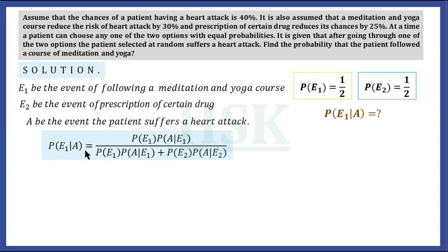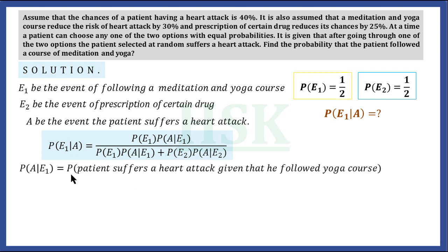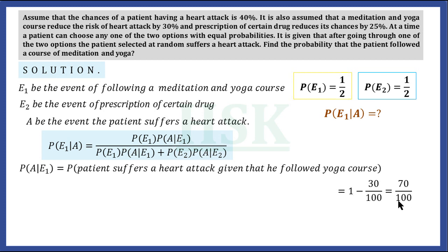To calculate P(E1|A), we require P(A|E1) and P(A|E2). P(A|E1) is the probability that the patient suffers a heart attack given that he follows a yoga course. This equals 1 minus 30/100, which is 70/100. Because the yoga course reduces the risk of heart attack by 30%, there are 70% chances of still suffering a heart attack.